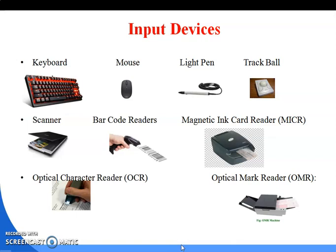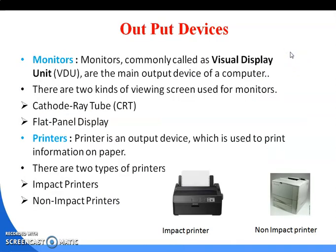That covers all the input devices used in the computer system. Next are the output devices. Under output devices, monitors and printers are the main ones. Monitors are used for soft copies and printers are used for hard copies. The monitor is also known as the Visual Display Unit, or VDU. There are two kinds of monitors: the CRT monitor and the flat panel display.